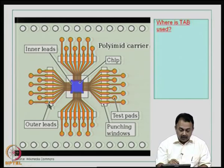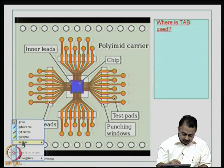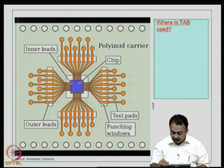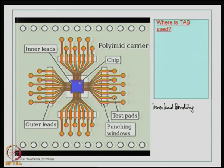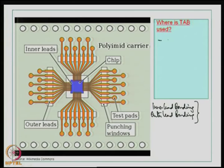You have inner lead bonding and outer lead bonding. You need to understand what inner lead and outer lead bonding are, and what are the temperatures, methodologies, and conditions for establishing this bond. Where is TAB used? Typically you can use TAB in the manufacture of smart cards.